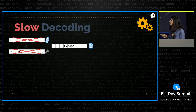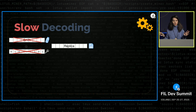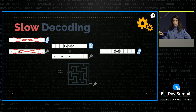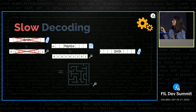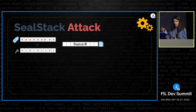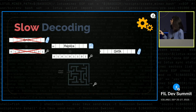Why is decoding slow and can we make it faster? In the sealing process: data plus key gives replica, and only the replica is stored. When someone asks for the data back, we must decode the replica back to the data. Today this is symmetric — to recover the data you add back the key, which requires running the same expensive computation again. This is slow. We considered making it faster, but if decoding is faster than encoding, a new attack emerges.